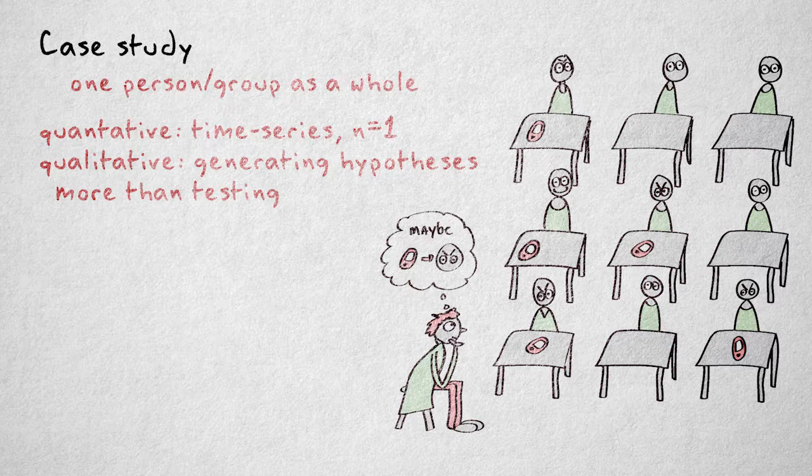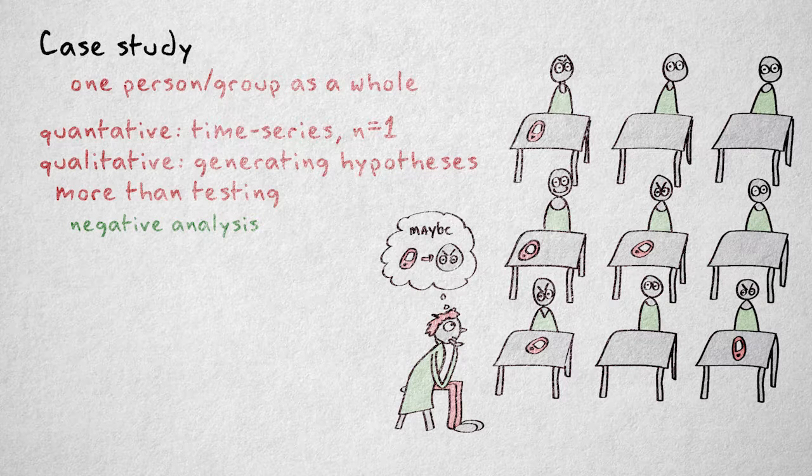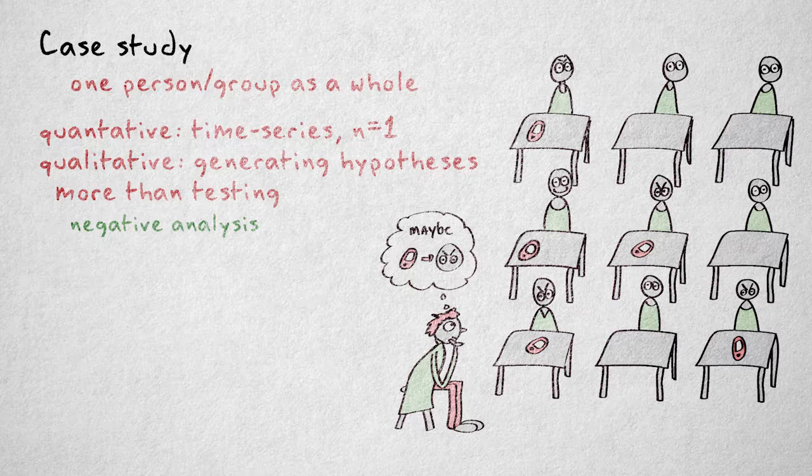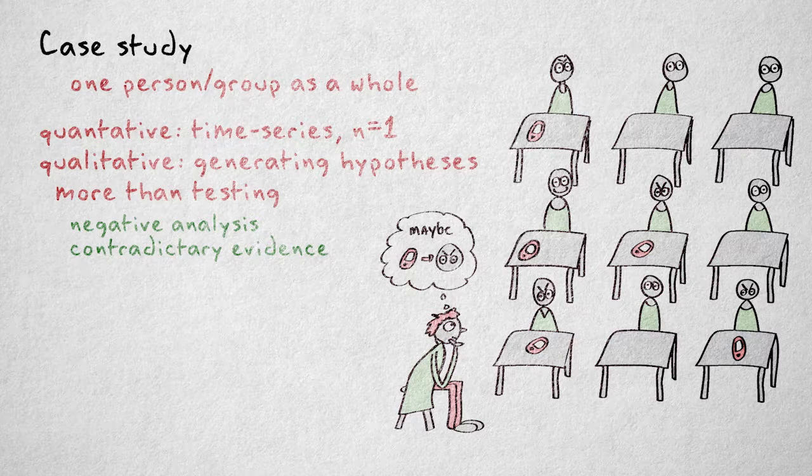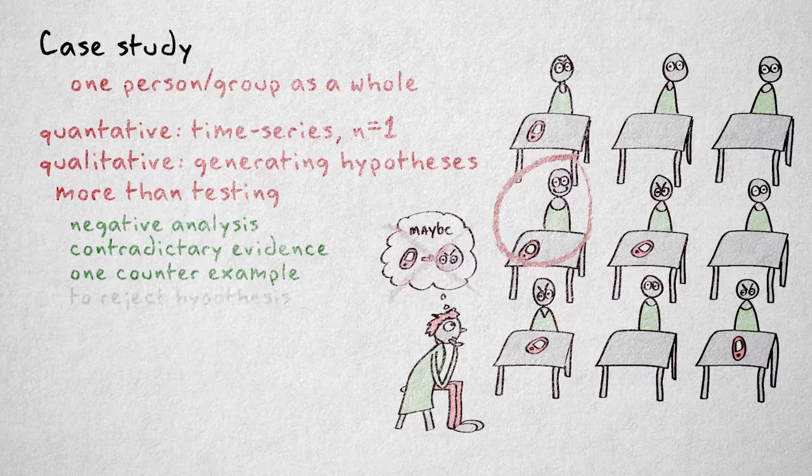It's called negative case analysis. Negative case analysis means that the researcher actively searches for a case that provides contradictory evidence, evidence against a hypothesis. Supporting a hypothesis requires a lot of consistent confirmatory evidence and is always provisional, but in theory, you just need one good counterexample to reject a hypothesis.